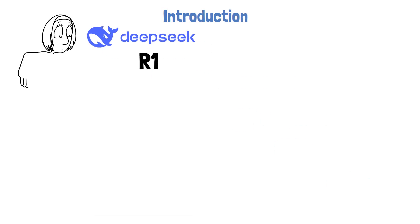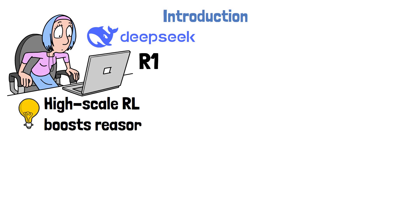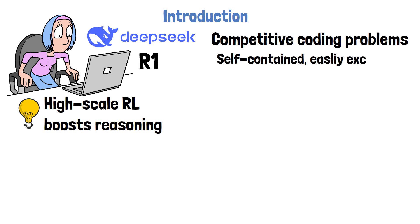The release of DeepSeek R1 has recently made waves in the AI world. Specifically, it showed how powerful reinforcement learning can be in boosting the reasoning abilities of large language models. But when it comes to coding tasks, DeepSeek R1 mainly focuses on competitive programming where every problem is self-contained and you can easily run the code to check if the solution works. That makes it easy to measure success by simply executing the code.